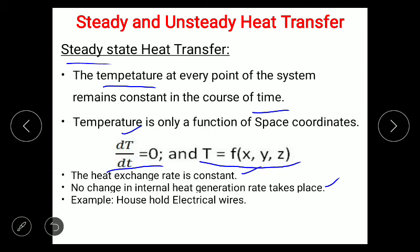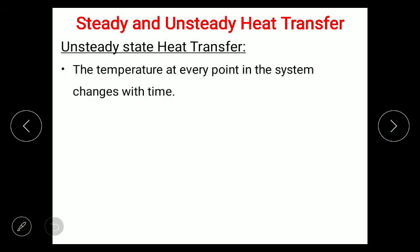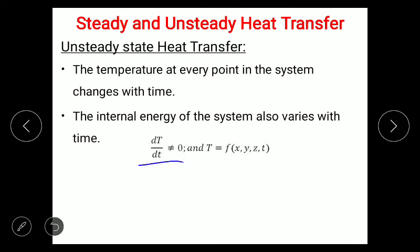Moving on, the unsteady state heat transfer is quite the reverse of steady state heat transfer. In unsteady state, dT/dt ≠ 0 — there will always be some change in temperature with respect to time. Therefore, temperature becomes a function of both the space coordinates x, y, z and time t. In unsteady state heat transfer, both the temperature and the internal heat energy generated change with respect to time.